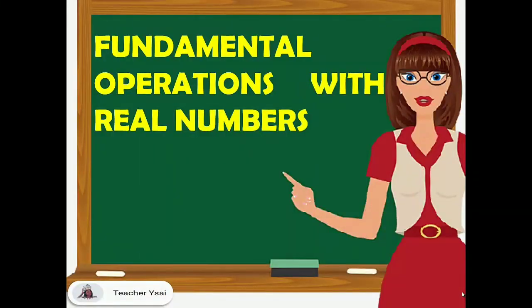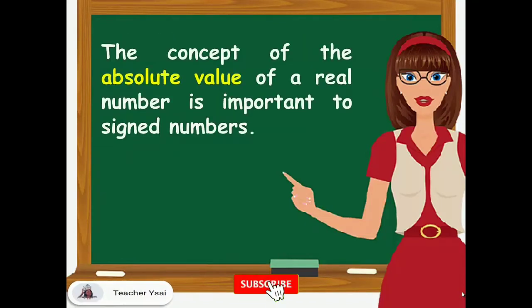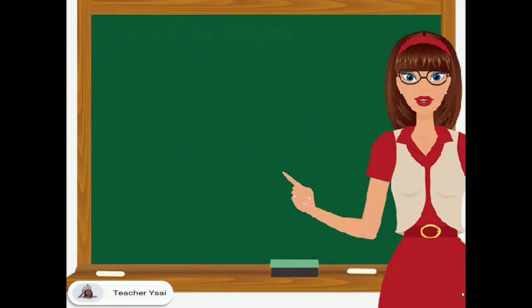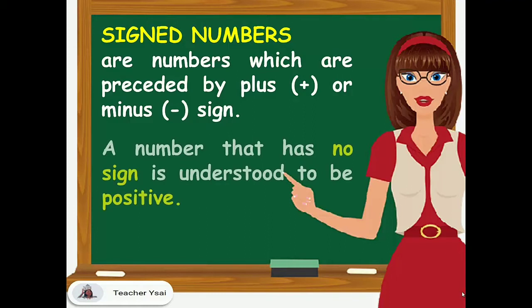Fundamental Operations with Real Numbers. The concept of the absolute value of a real number is important to signed numbers. Signed numbers are numbers which are preceded by plus or minus sign. A number that has no sign is understood to be positive.